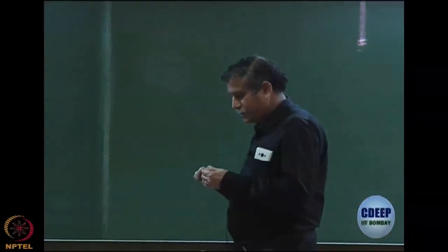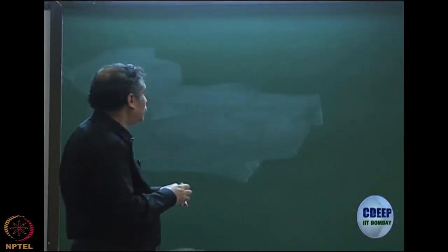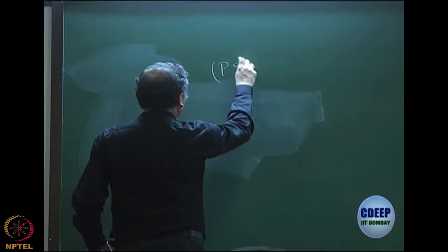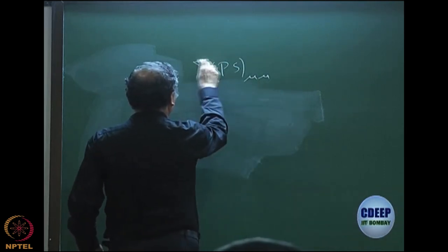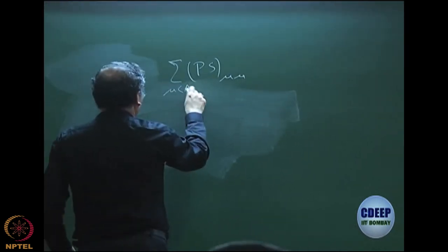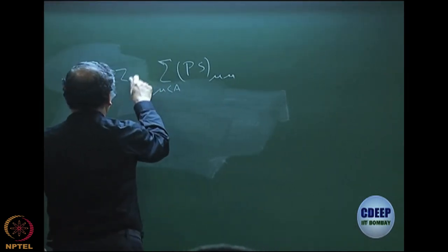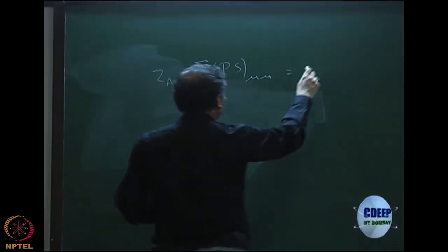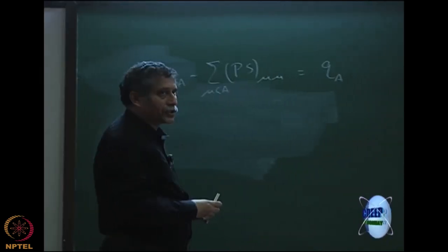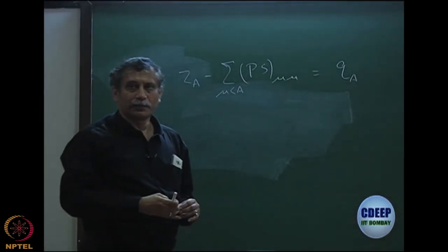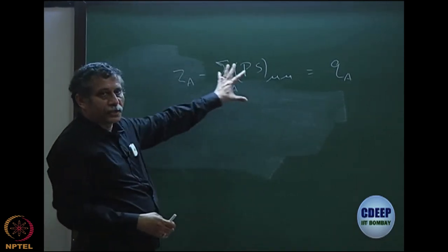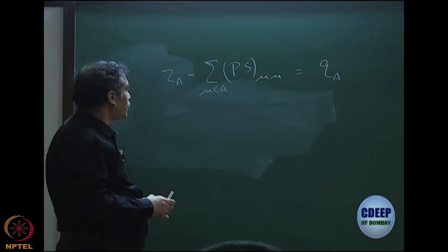We were discussing the population analysis. If you construct the PS matrix and take all the basis functions over a particular atom, sum them, and subtract this from the charge of the atom, this becomes the atomic charge — the total effective charge of atom A in the molecule. This gives the total electrons, and that subtraction is the charge of the atom in the molecule.